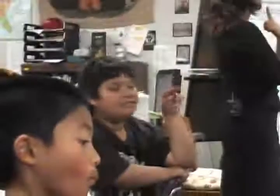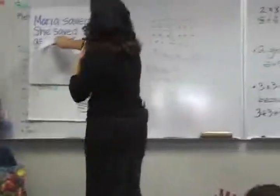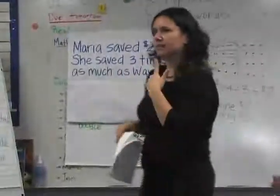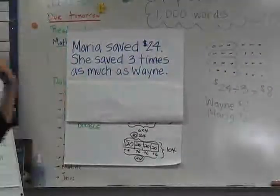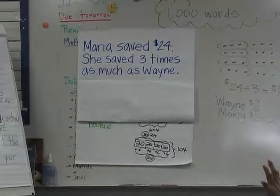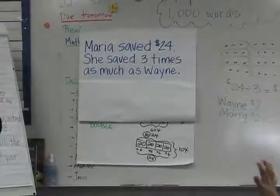If you think you also know, if you could come up here and show us this sentence, she saved three times as much as Wayne. She saved three times as much as Wayne. If you think you see that in the picture, show us with three fingers.